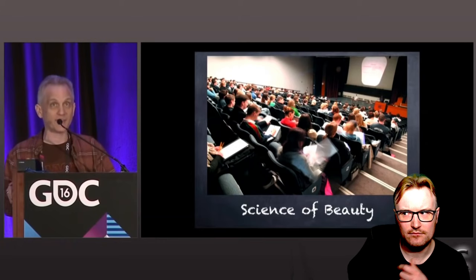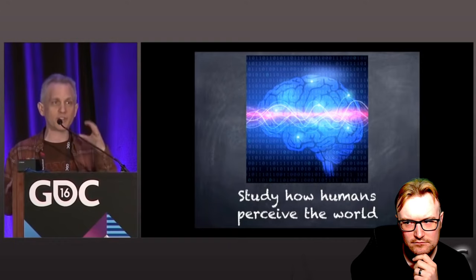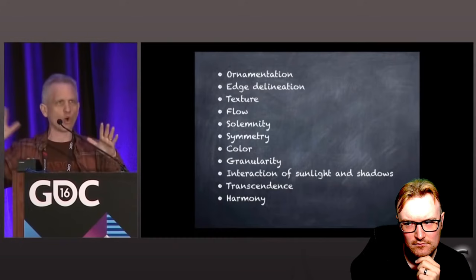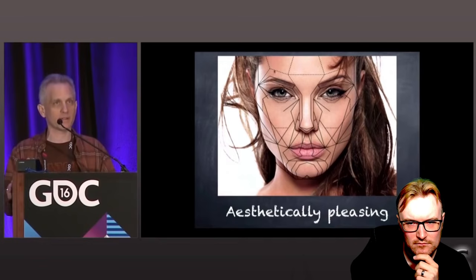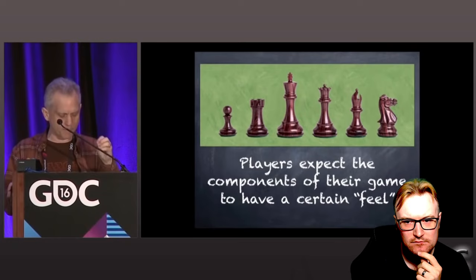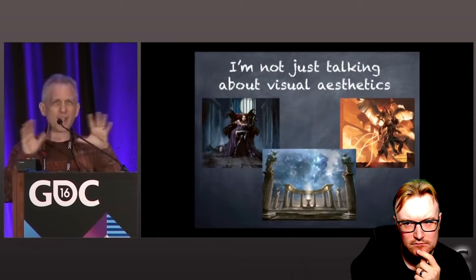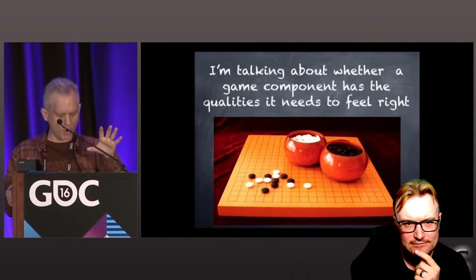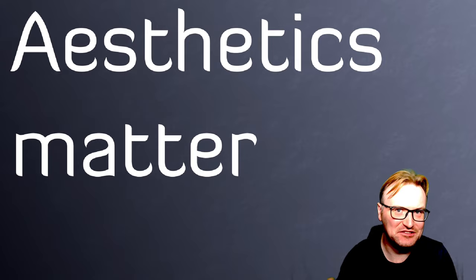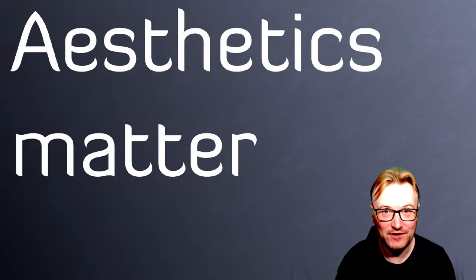One of the classes Mark took was called Aesthetics — also known as the Philosophy of Art or the Science of Beauty. The idea of aesthetics is studying how humans perceive the world: how does the brain work, how do the senses work, how do people perceive things around them? They look at qualities that humans share across cultures and try to figure out what is aesthetically pleasing. In your game, players expect the components to have a certain feel — not just visual aesthetics, but whether the game component has the right qualities. It has to feel right.